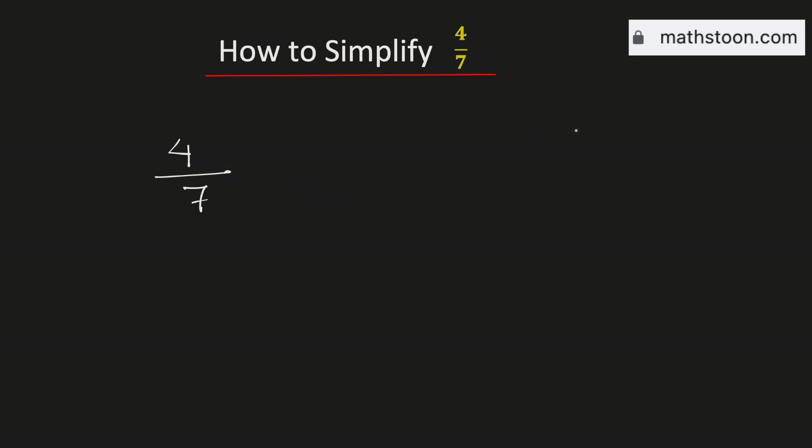We know that 4 is divisible by 1, 2, and 4. And 7 is divisible by 1 and 7 only.